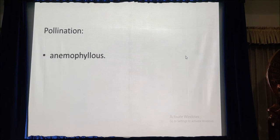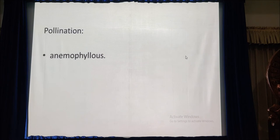Pollination in Cycas is anemophilous. The mature microsporangium dehisces, liberating large numbers of three-celled microspores. These microspores become entangled in the adhesive fluid that oozes out from the micropylar end of the ovule. Further development takes place inside the ovule.